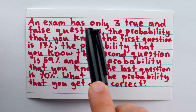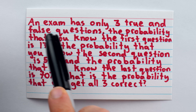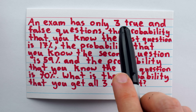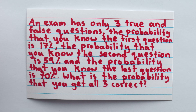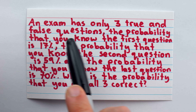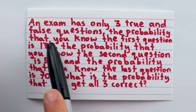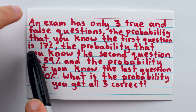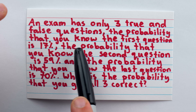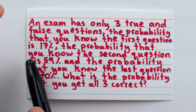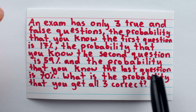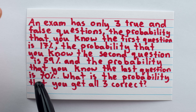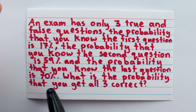An exam has only three true and false questions. The probability that you know the first question is 17%. The probability that you know the second question is 59%. And the probability that you know the last question is 70%. What's the probability that you get all three true or false questions correct?